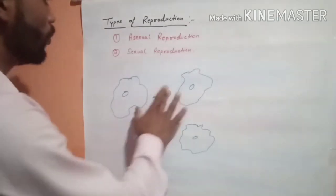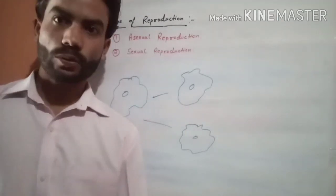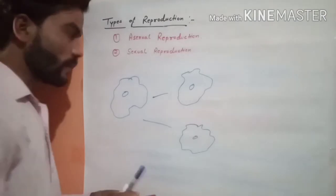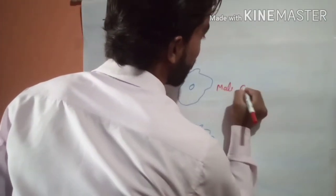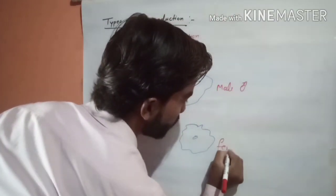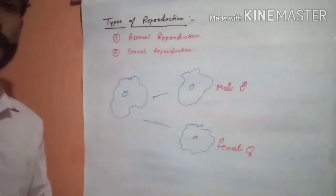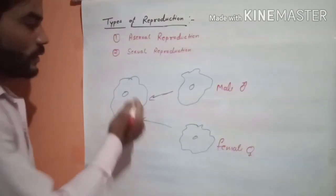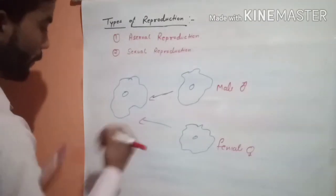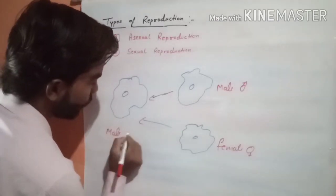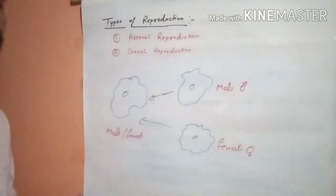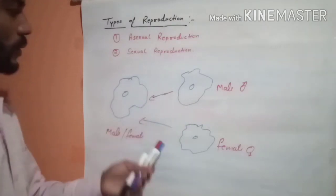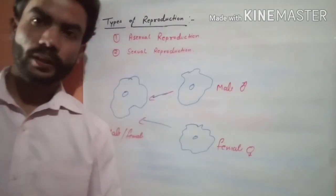Sexual reproduction क्या होता है? यहाँ पर दो individuals की जरूरत होती है जो different sex को carry करेंगे — male और female. उदाहरण के तौर पर, यह है male और यह है female. यह दोनों reproduction करेंगे और एक नया organism produce करेंगे जो या तो male होगा या female. उसमें थोड़ा सा variation आएगा। इस process को हम sexual reproduction बोलते हैं।